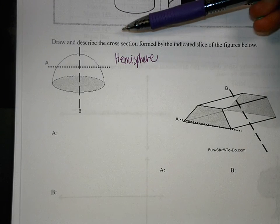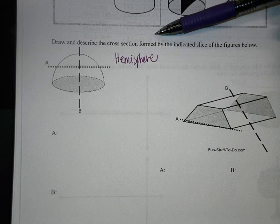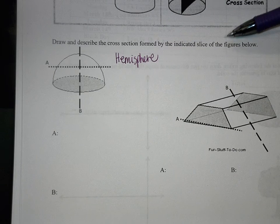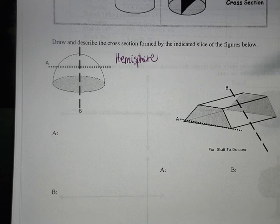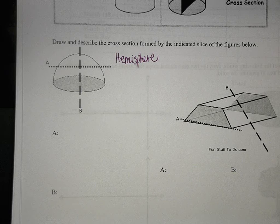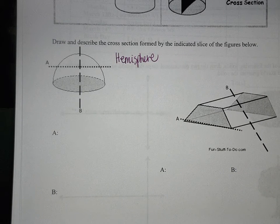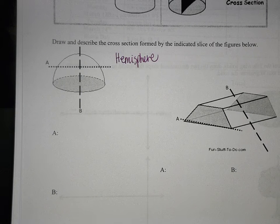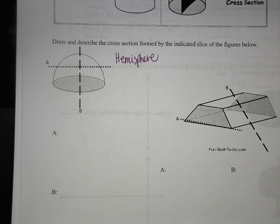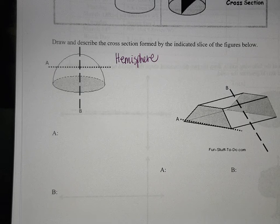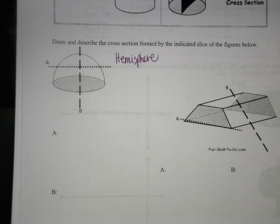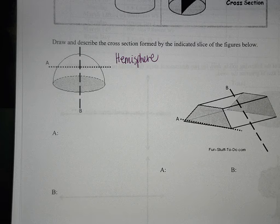So you want to think about these shapes, and what they've asked us to do is to draw and describe the cross-section formed by the indicated slice of the figures below. So if you think about a half circle or a dome-shaped figure, which in fact if you look at Caitlin's lid on your cup, there is a hemisphere.